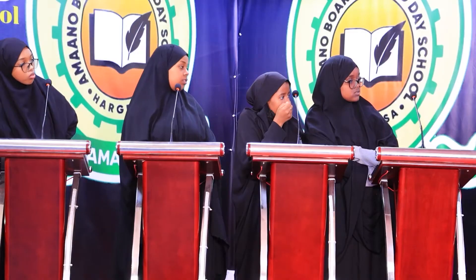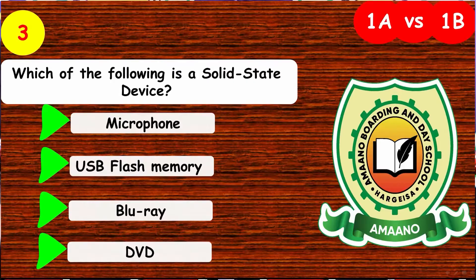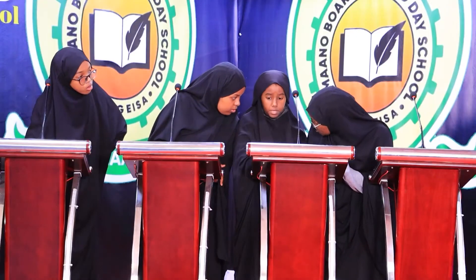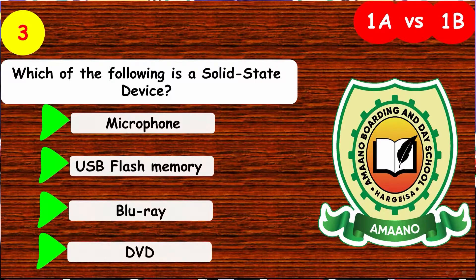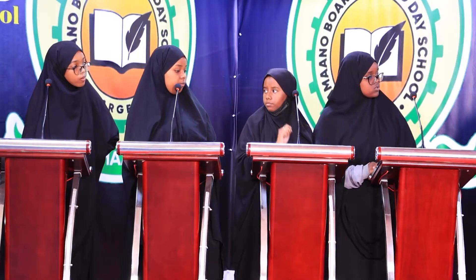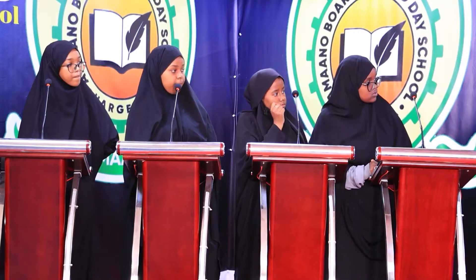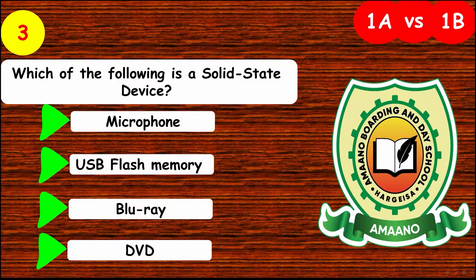Number three, this is an ICT question. Which of the following is a solid state device? A, microphone; B, USB flash memory; C, Blu-ray; D, DVD. The answer is B, USB flash memory. That's correct.